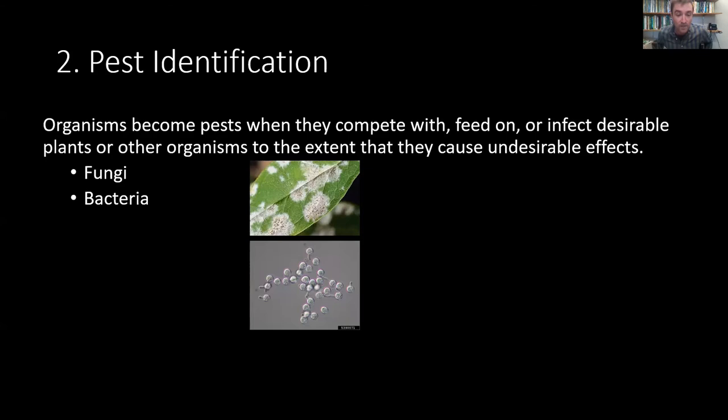The next general category is bacteria. Bacteria are neither plants nor animals — they're something separate. Bacteria are ubiquitous, which means they're everywhere: on you, in you, all in our world, including in and around our plants. Again, like fungi, most bacteria are beneficial or benign. A small percentage is going to be pathogenic to your plants, so you can have bacterial diseases inflicted upon your plants.